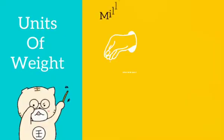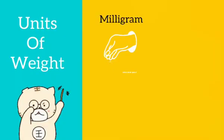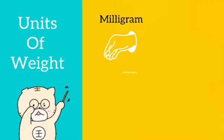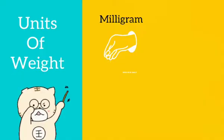The first one is milligram. One milligram is equal to about a grain of sand or salt.